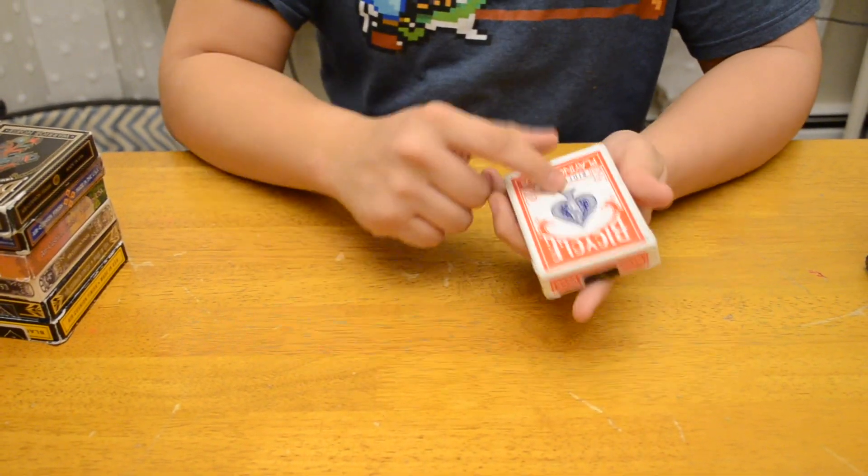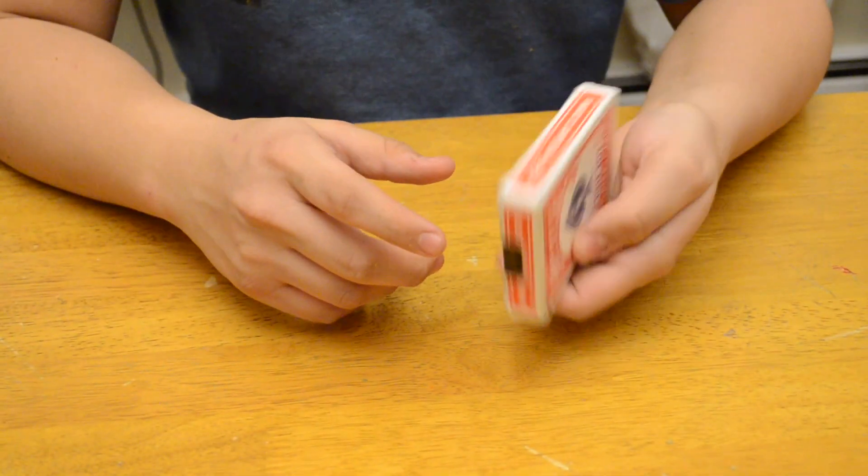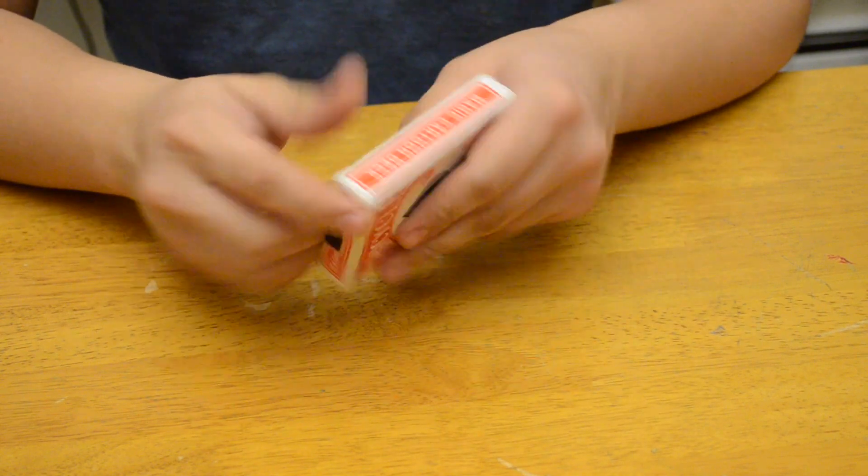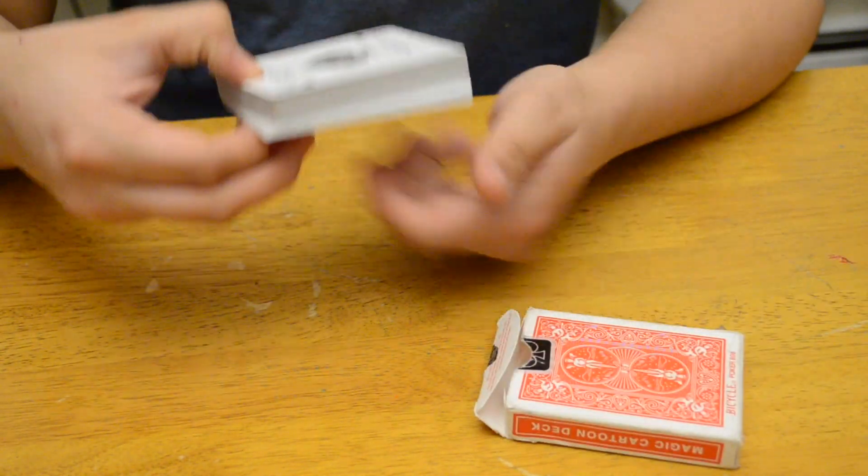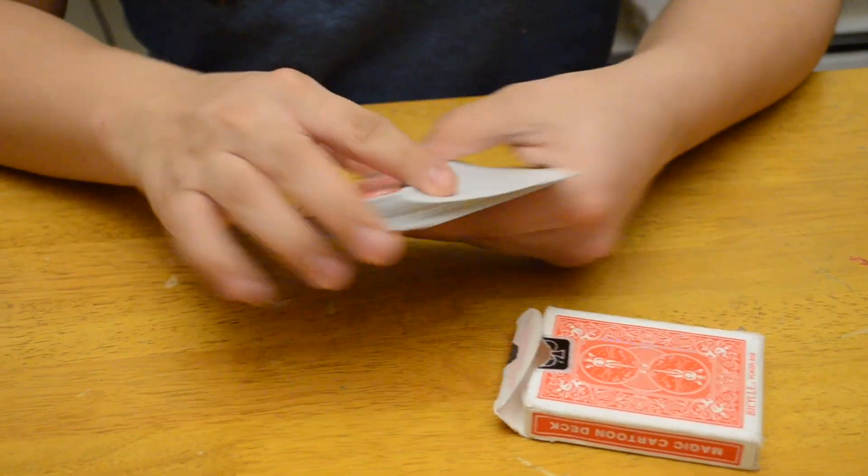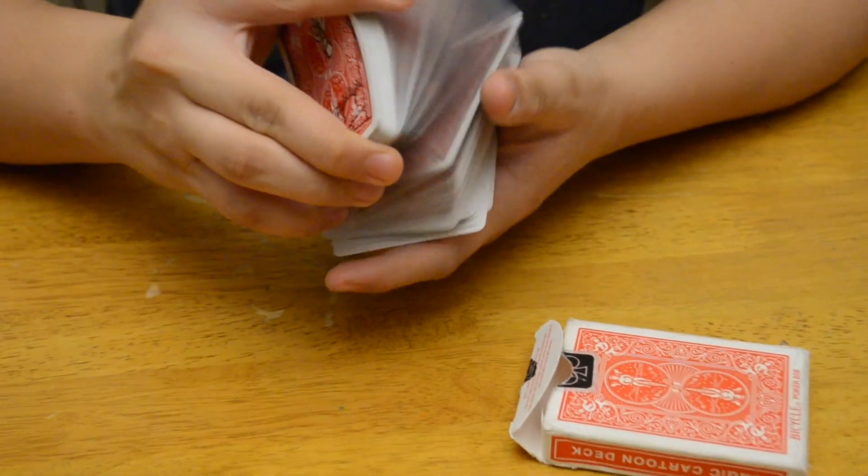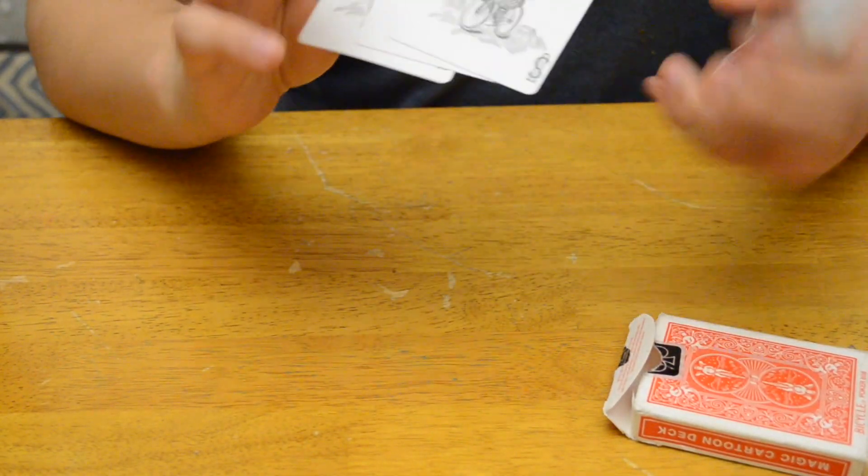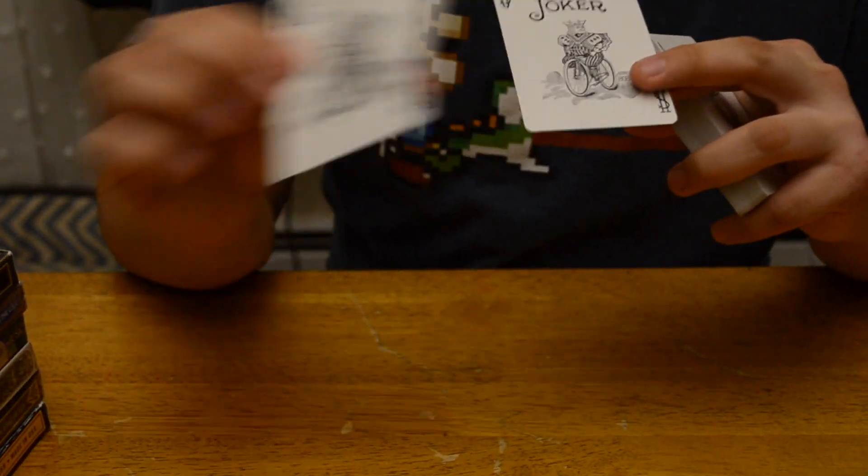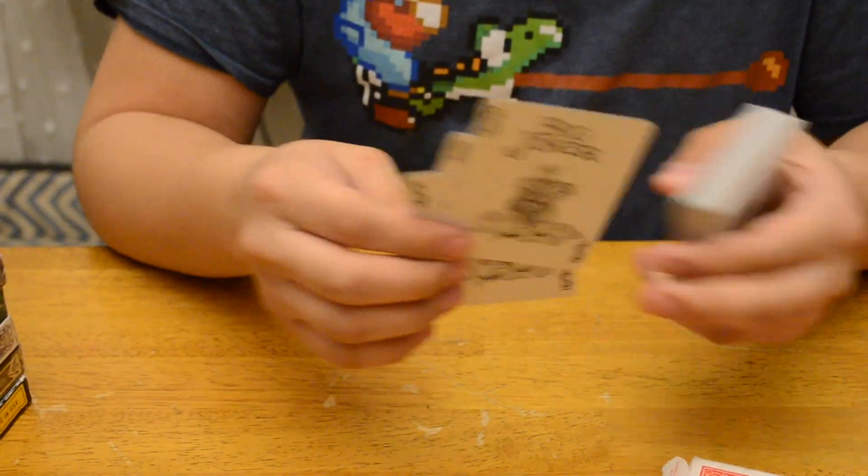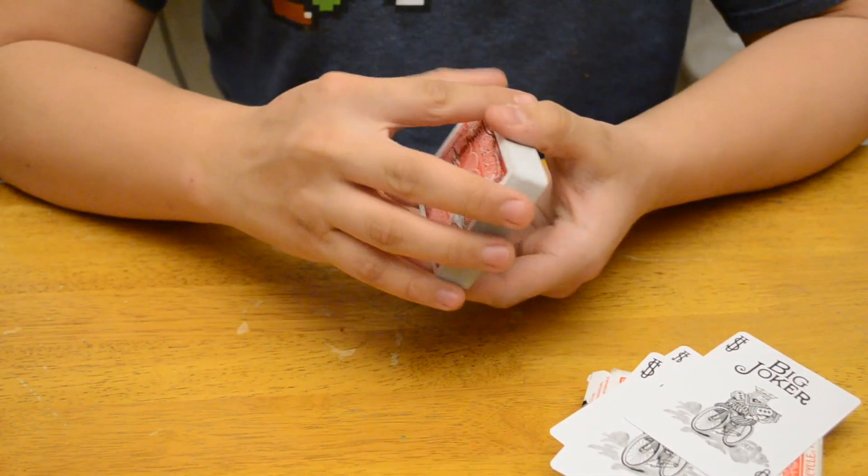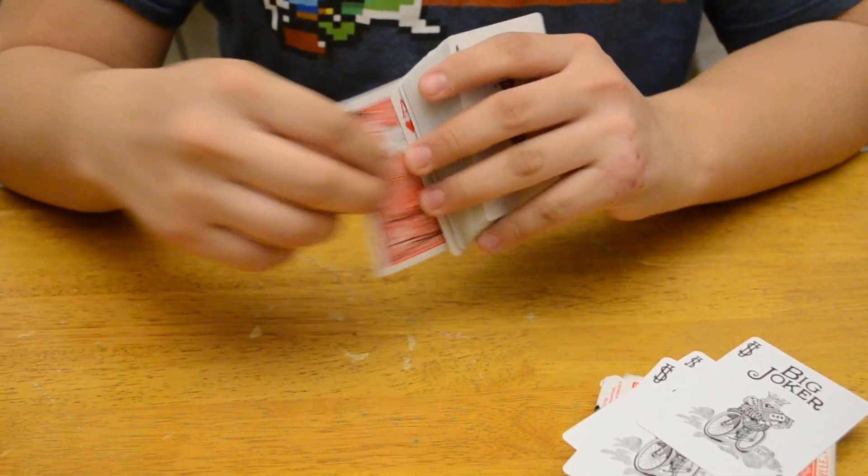Now this is a Magic Cartoon Deck. It's not original Ryder back. The box is from 2009. So they just like redid it. It fans nice but that's not very nice. One weird thing is that it comes with the big joker, little joker, and a regular joker. But what doesn't make sense is that the big joker is smaller than the regular joker.